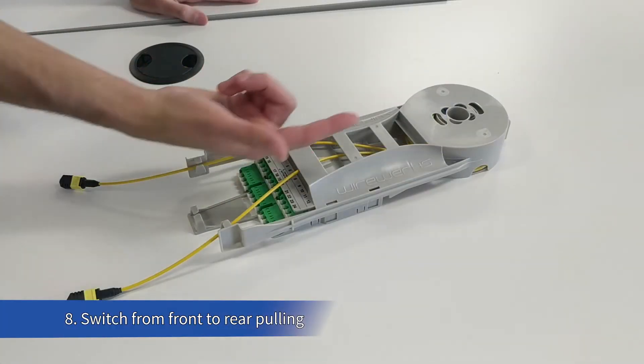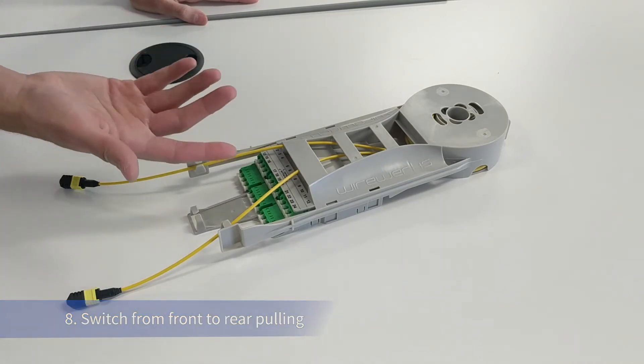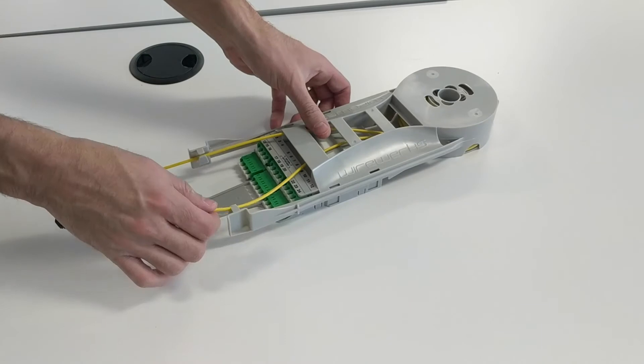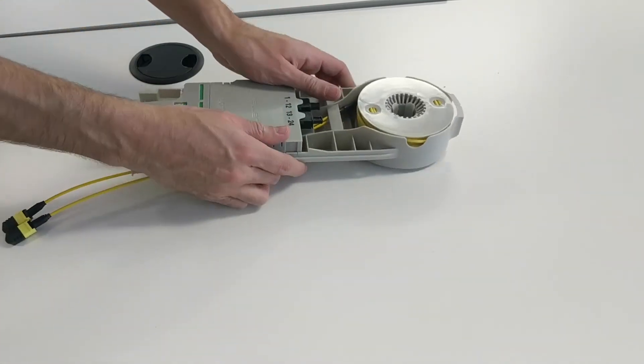Now, here's one last thing. If you're required to switch from the front to the rear pulling position, you can start by simply removing the cable assembly from any front supporting cable management.